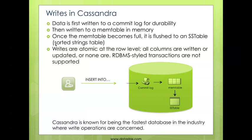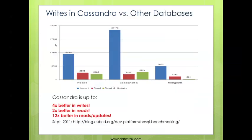Cassandra is known in the industry as the fastest database where writes are concerned. This independent benchmark shows Cassandra with four times better throughput in writes and over 12 times better throughput in a mixed workload environment for reads and updates. It also achieved two times better throughput than one of its rivals in reads.